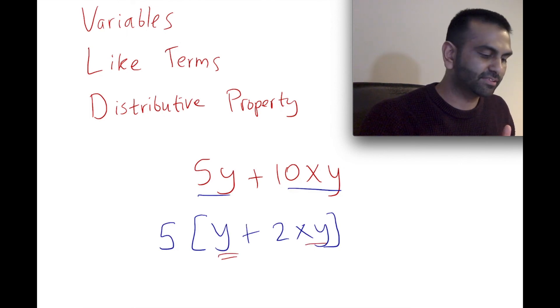Namely, this term has a Y if you look at the variables, and this term has an X and a Y, which means if you divide this by Y you're still going to have the X left. You divide this by Y, you're going to have 1 left, but the point is you actually can divide both by Y, meaning you can pull it out.